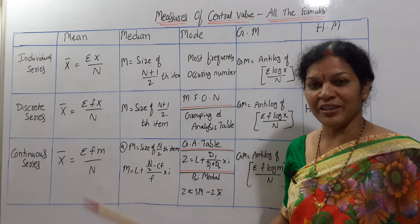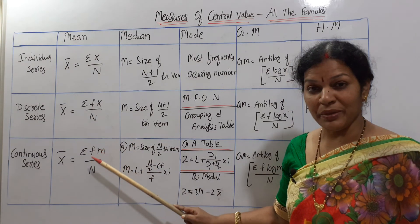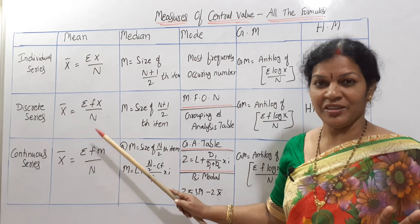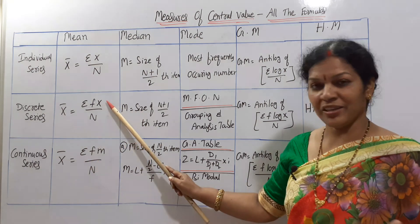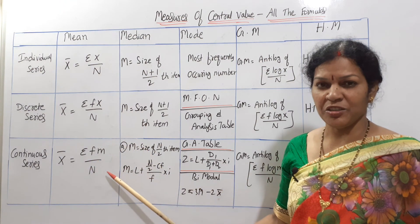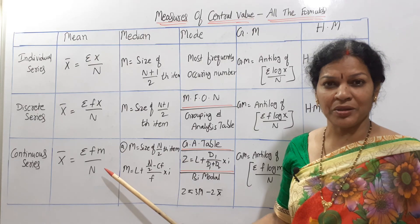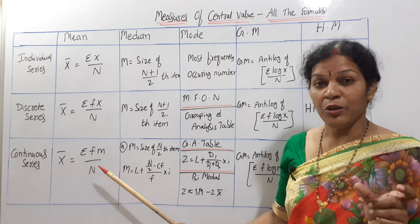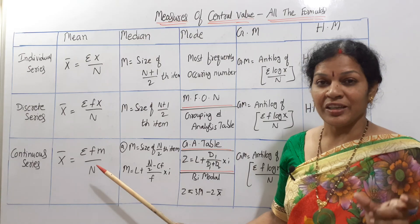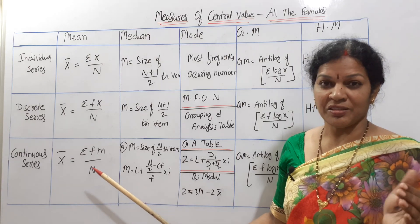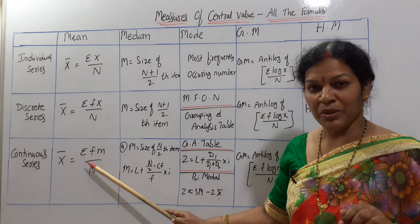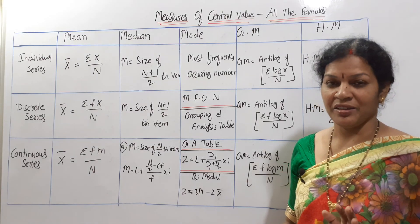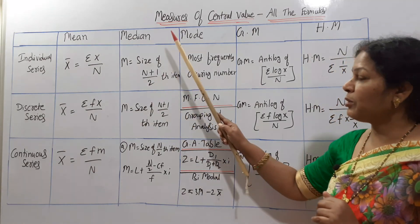When it comes to continuous series, fx is changed into fm, giving Σfm/n. M represents the mid value of the class interval. In discrete series you can use X directly, but in continuous series we take the mid value which represents the class interval — that is why the formula changes to Σfm/n.